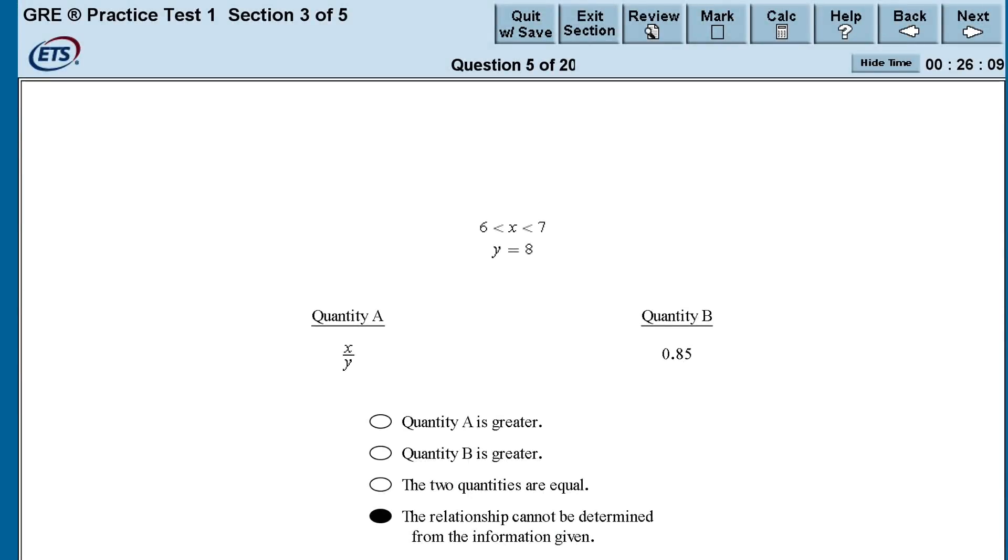For example, in this problem, we know that y is 8. So the denominator of quantity A is 8. We also know that x must be somewhere between 6 and 7. We want to determine whether or not x divided by 8 is greater than, less than, or equal to 0.85. Since we have a range of possibilities for x, we're likely thinking about maximum values versus minimum values. So here, I would plug in one low value for x, like 6.01, and one high value for x, like 6.99. Probably going to use a calculator here. In this case, a low value for x will yield a value lower than quantity B, and a high value for x will yield a value greater than quantity B.